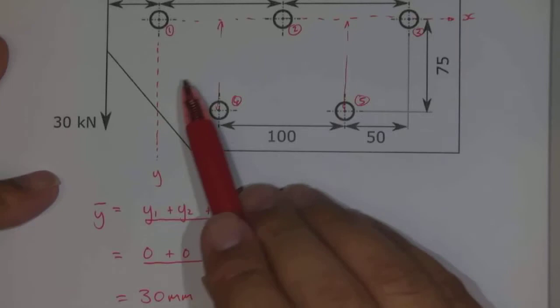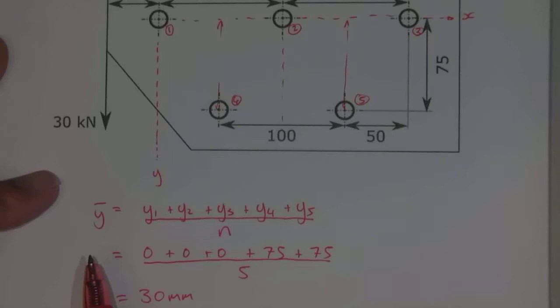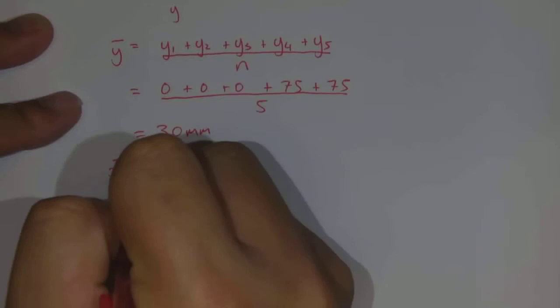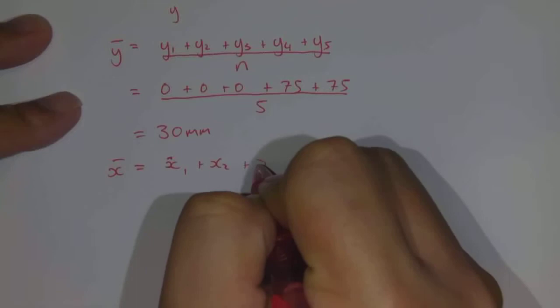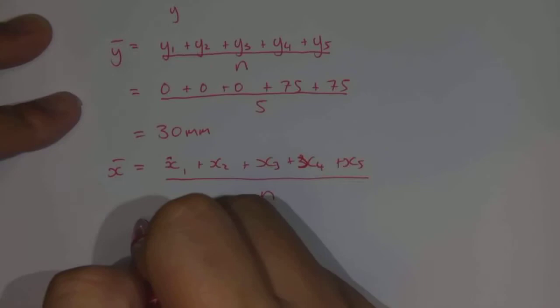So for finding the x coordinate, you could look at this and just see that it's symmetrical, so it's going to be somewhere along this line of axes here. But let's go through the similar calculation for finding the x coordinate. So x bar is equal to x1 plus x2 plus x3 plus x4 plus x5, all divided by the number of values that we've got.